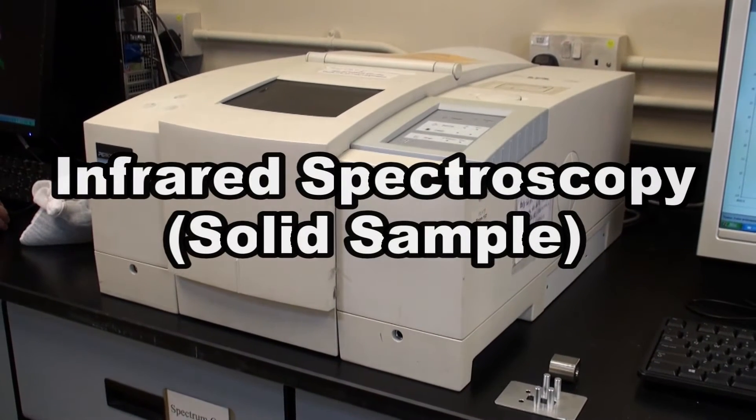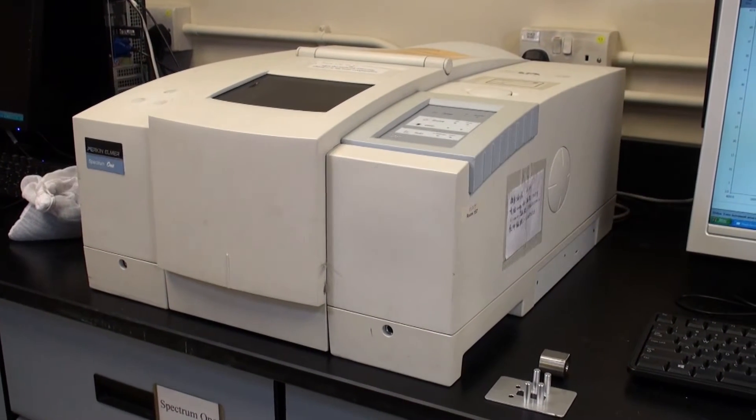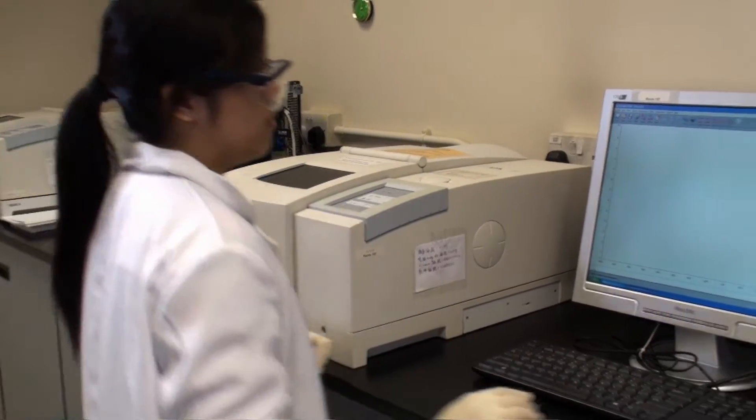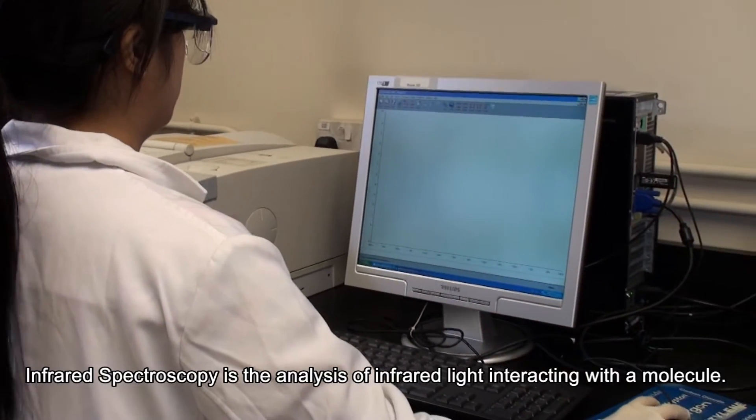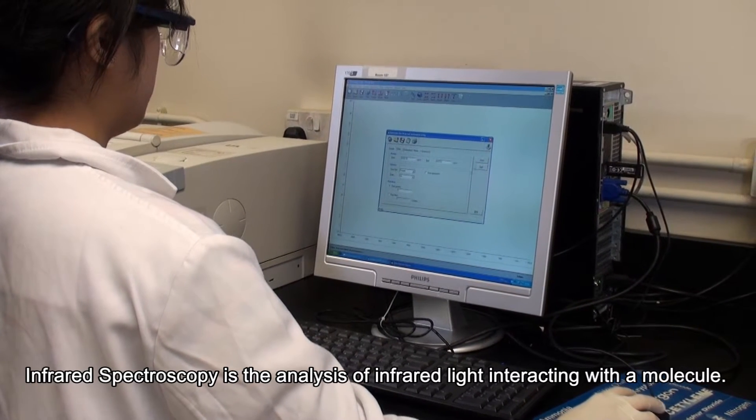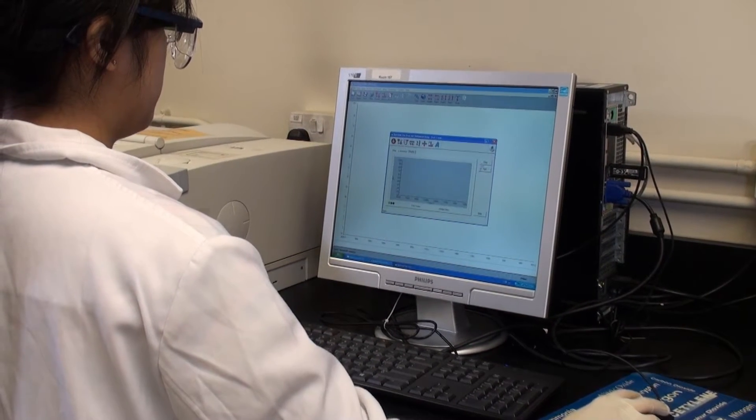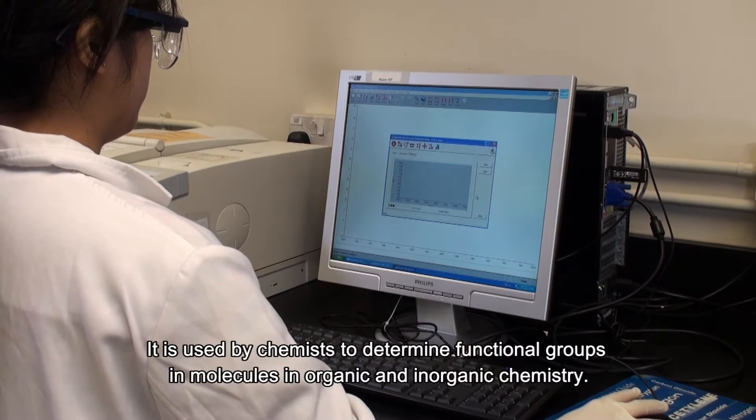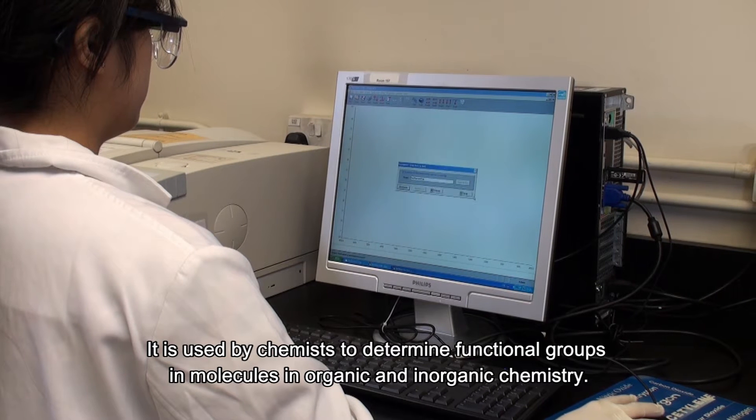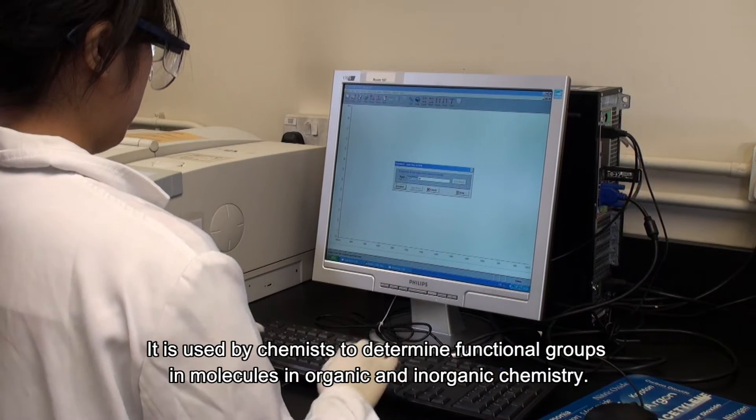Infrared Spectroscopy Solid Sample. Infrared spectroscopy is the analysis of infrared light interacting with a molecule. It is used by chemists to determine functional groups in molecules in organic and inorganic chemistry.